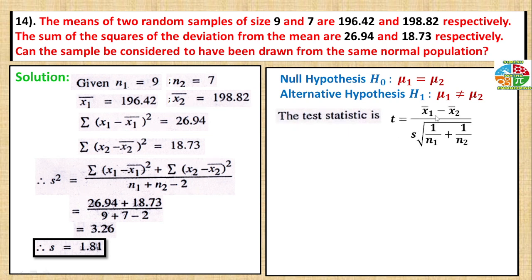The t-test formula is: x1 bar minus x2 bar divided by s times the square root of 1 by n1 plus 1 by n2.